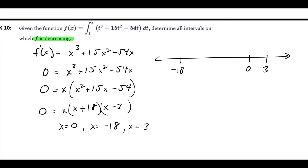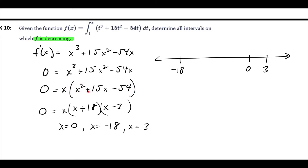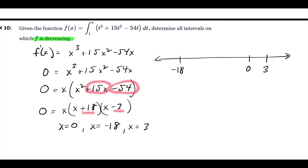Solving for x — it's got a GCF of x, so I factor out an x. Then it's a quadratic, so I factor the quadratic. I need two numbers that add up to positive 15 and multiply to be negative 54: positive 18 and negative 3. Setting each factor equal to zero gives me three critical values.